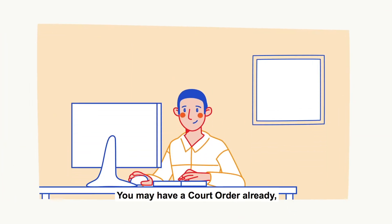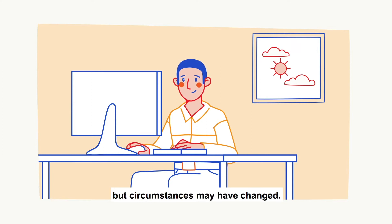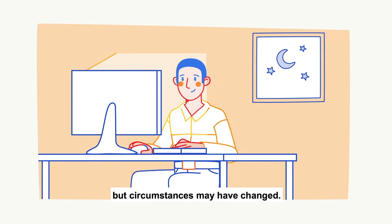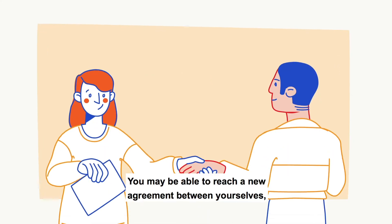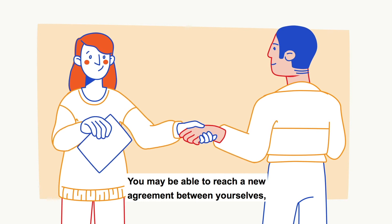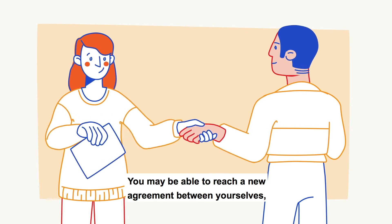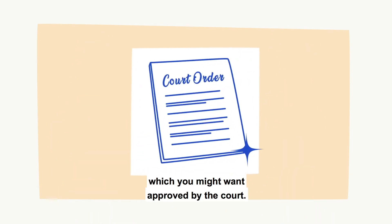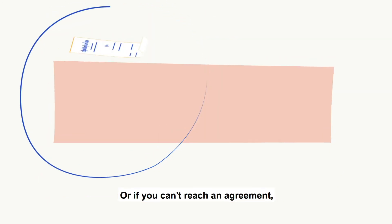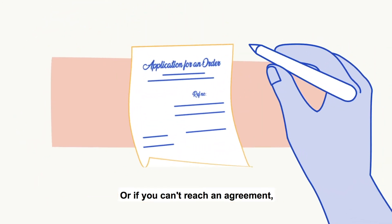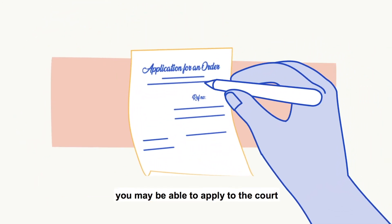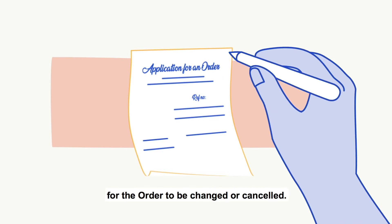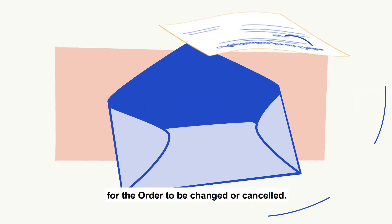You may have a court order already, but circumstances may have changed. You may be able to reach a new agreement between yourselves, which you might want approved by the court. Or, if you can't reach an agreement, you may be able to apply to the court for the order to be changed or cancelled.